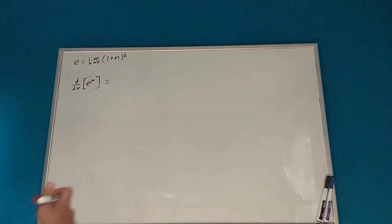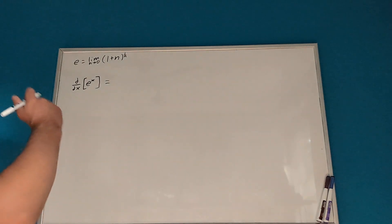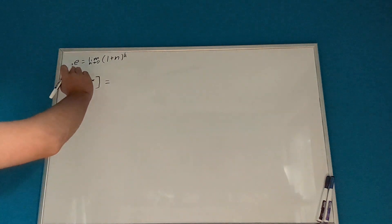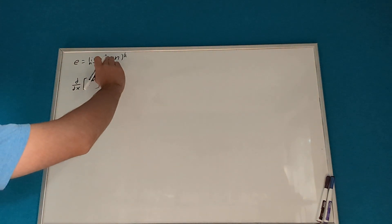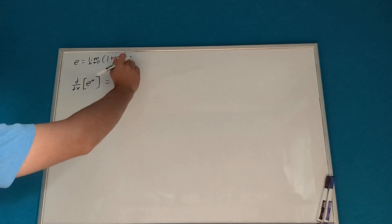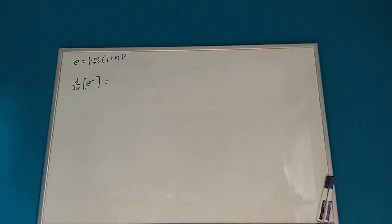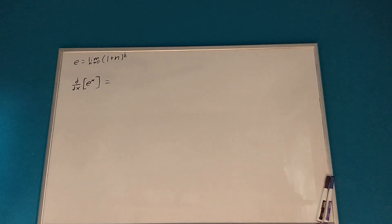Something we need to keep in the back of our mind is that e — Euler's number — is equal to the limit as n approaches 0 of 1 plus n to the power of 1 over n. So let's begin our proof now.